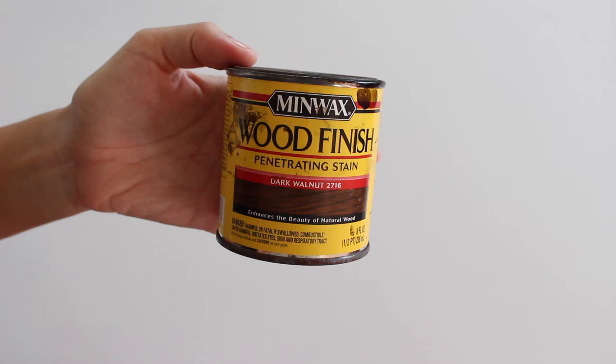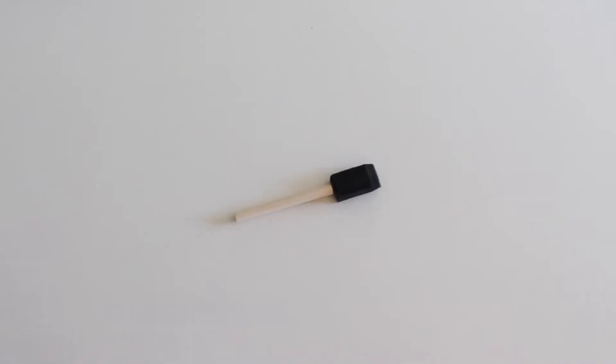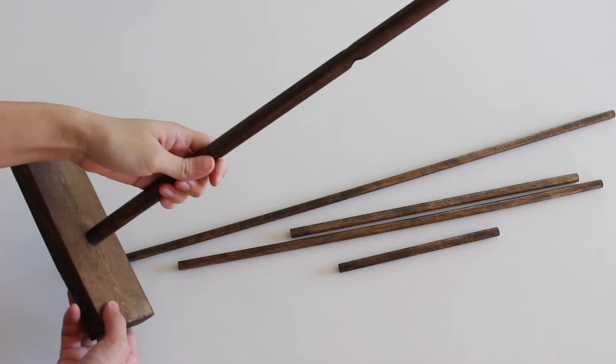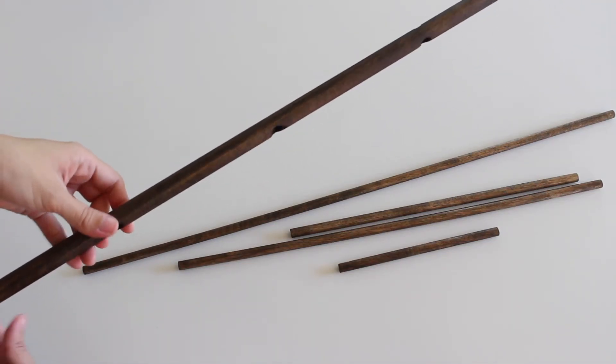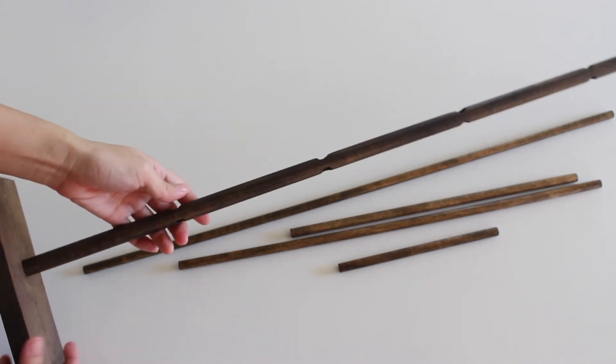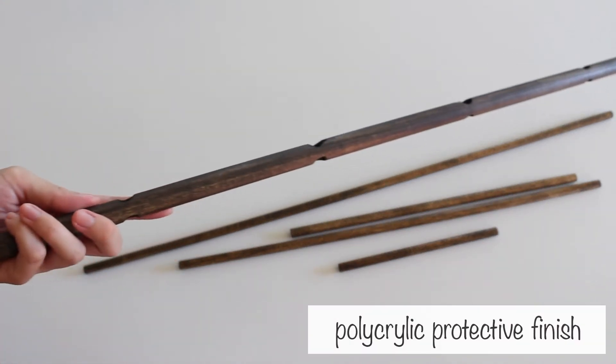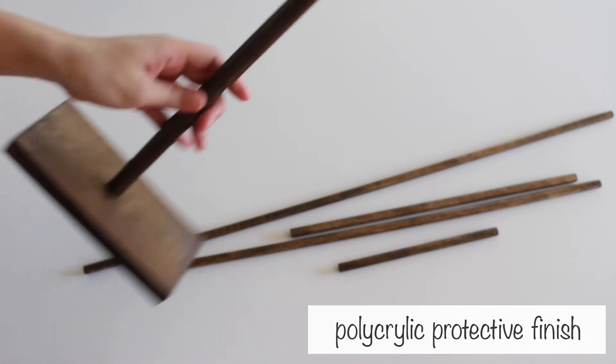I decided to stain it in the color dark walnut. I quickly wiped off the stain so that the pieces wouldn't turn out too dark. I'll eventually add a thin coat of polycrylic protective finish when the stain is completely dried.